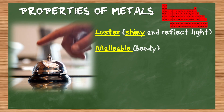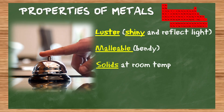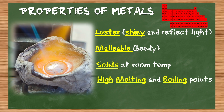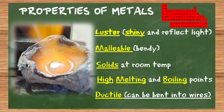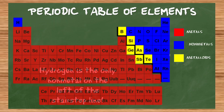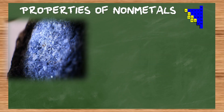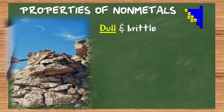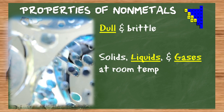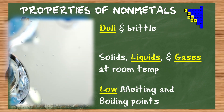Absolutely. Metals have certain properties that non-metals do not have. They're shiny, malleable — which means they're bendy — and most are solids at room temperature. They have high melting and boiling points, and they are ductile, so they can be bent into sheets and wires. Non-metals — the ones on the right side, except for hydrogen — are opposite: they're dull, brittle, and can be solids, liquids, or gases at room temperature.